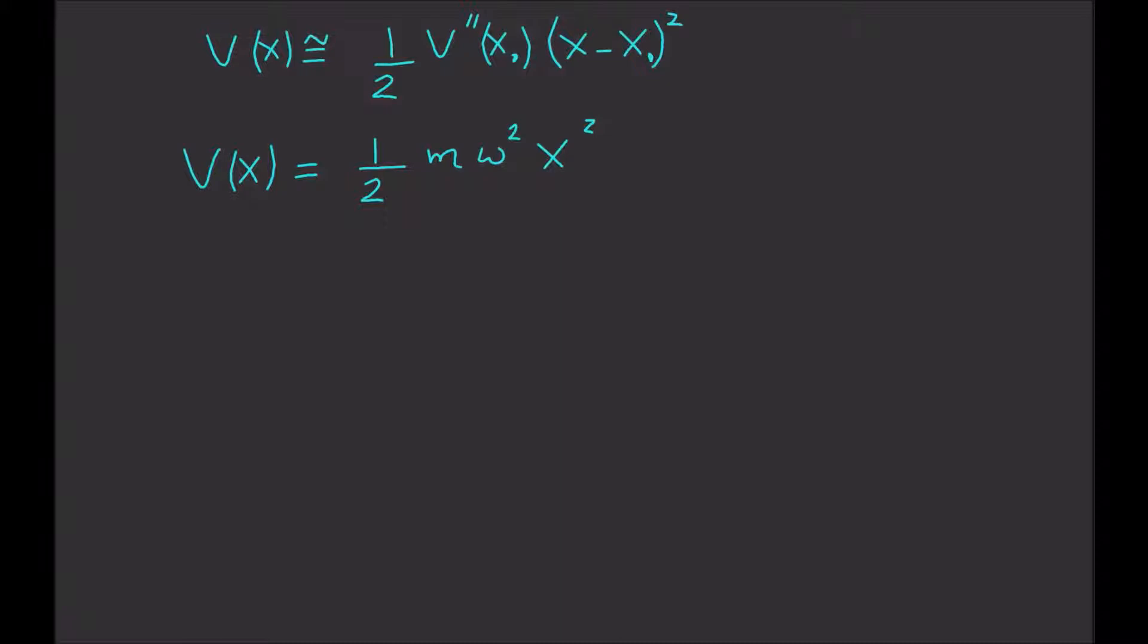Our job now is to solve the Schrödinger equation for this potential. If you remember, the Schrödinger equation is Ĥψ = Eψ. The Hamiltonian is given by minus ℏ² divided by 2m times the second partial derivative with respect to x, plus some potential function of x.